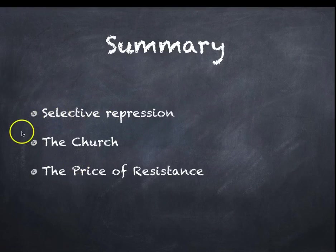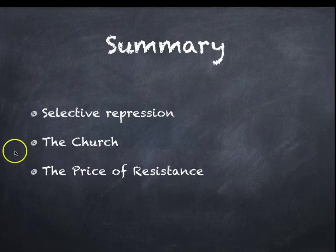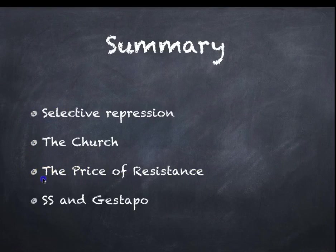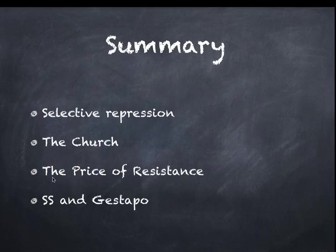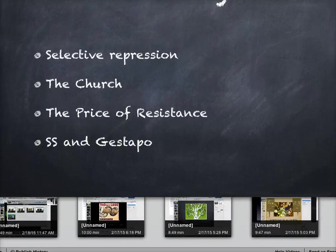That itself questions the nature of how much it was actually a totalitarian regime — he wouldn't have dared close the churches. The price of resistance was concentration camps and the death penalty, enforced by the SS and Gestapo. I hope you made some decent notes if you're a GCSE student, and good luck with the quiz.